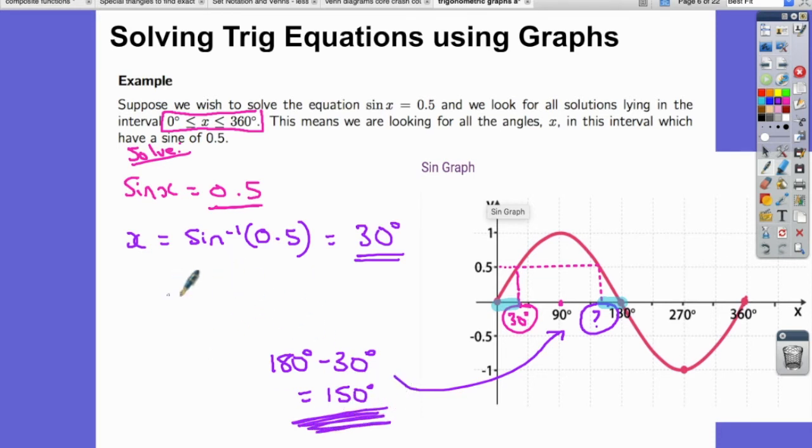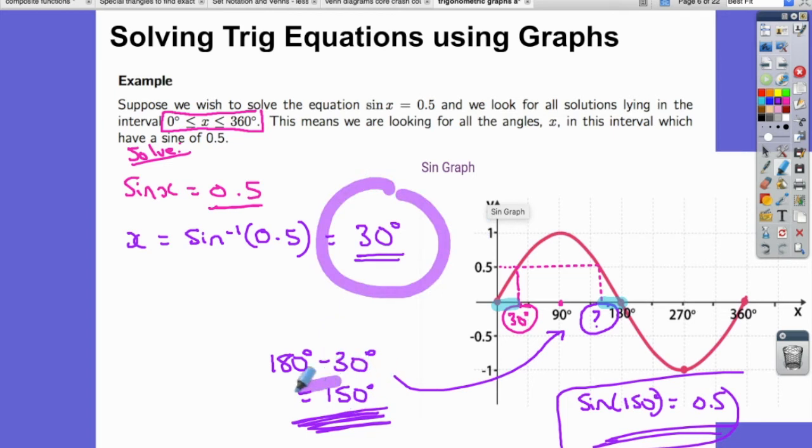And I could also obviously go and check that. So I'm going to put that into my calculator now. Sine 150 degrees equals, yes, it does. It equals 0.5. So you can go and check. Now, I don't think there are definitely no more answers here because then the graph is going below the x-axis to give negative values of sine x. So they're my two answers. So I've got two answers to the first question, 30 degrees and 150 degrees.